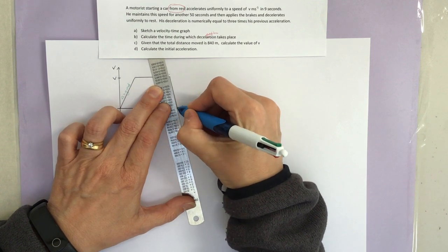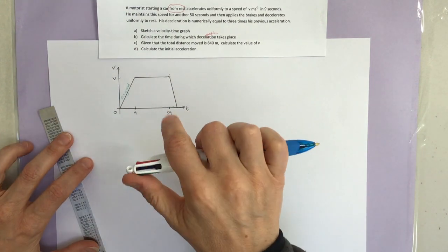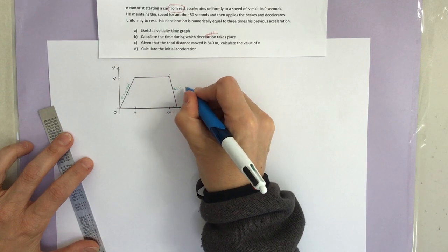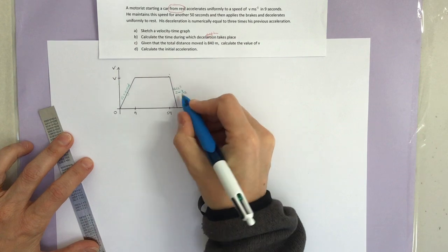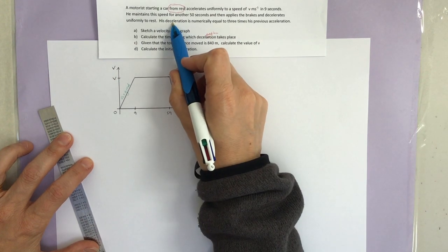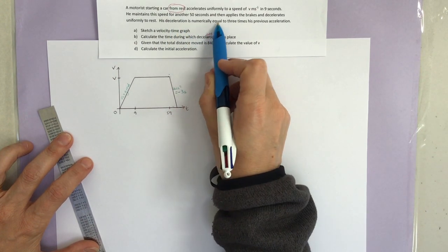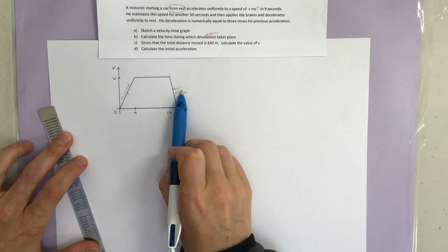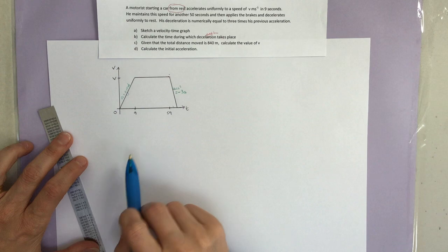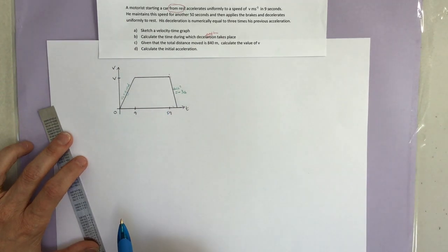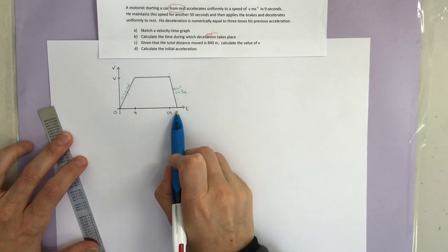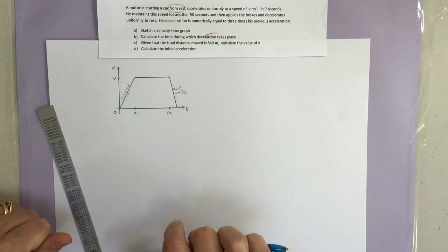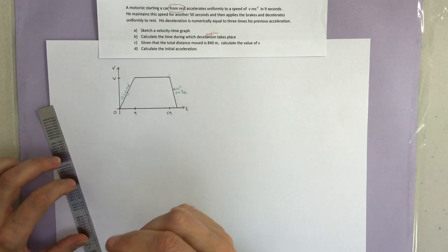My acceleration there is going to be equal to negative 3A, and that's really important. Deceleration tells us A is negative. This 'numerically equal' is saying it's three times A, but only numerically — the sign of it is negative. There's my velocity-time graph. I don't know what the final time is, but I should be able to work that out using the information in the question. Part A is done.